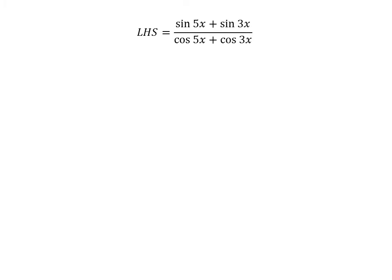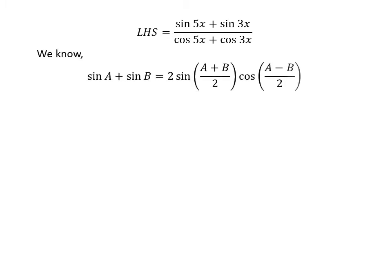The left hand side of the equation to be proved is sine of 5x plus sine of 3x upon cosine of 5x plus cosine of 3x. We know the trigonometry identity: sine of a plus sine of b is equal to 2 times sine of half of (a+b) times cosine of half of (a-b).